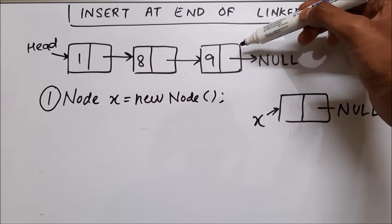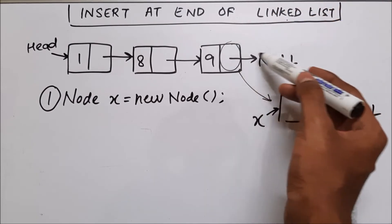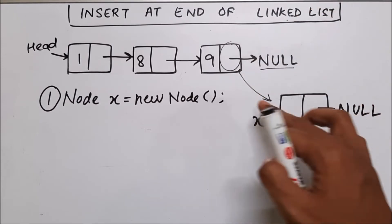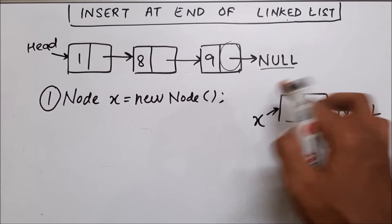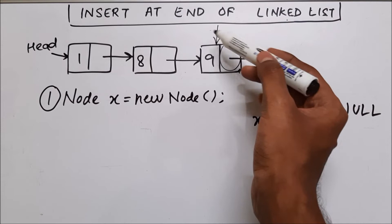Now we have to make this node point to this node. Instead of having null value, it should point over here. This is what we have to do, right? So first we have to reach this node. How we will reach this node?